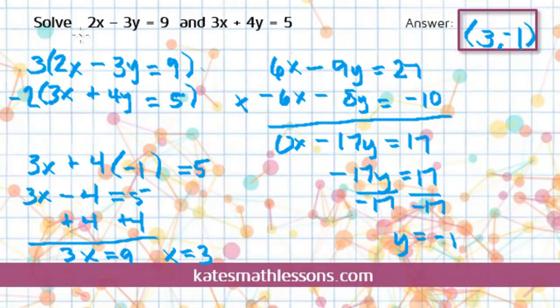If I plug in a 3 for x, 2 times 3 would be 6. And then if I plug in a negative 1, negative 3 times negative 1 is positive 3. And 6 plus 3 really does equal 9.